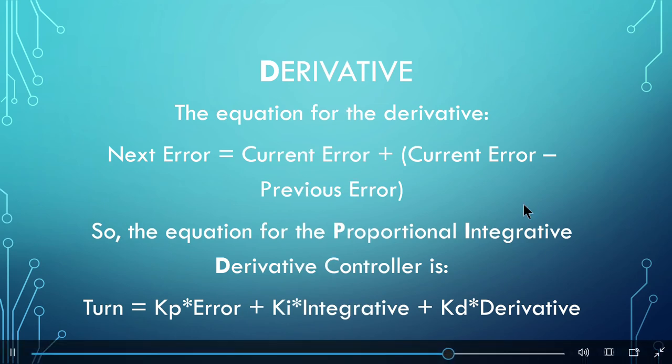Here's the equation for the derivative: next error equals current error plus current error minus previous error. Why does this work? This works because if you can find the change from the previous error to the error now, you can add it to the current error to potentially guess the next error.